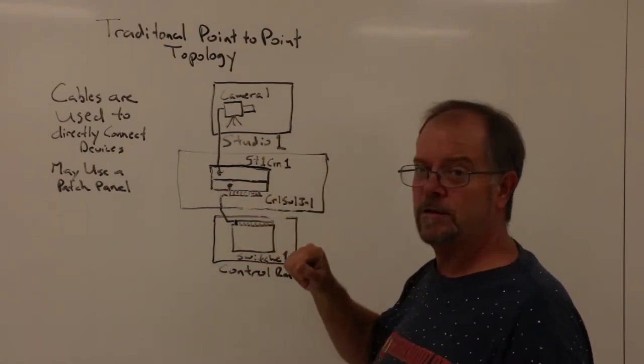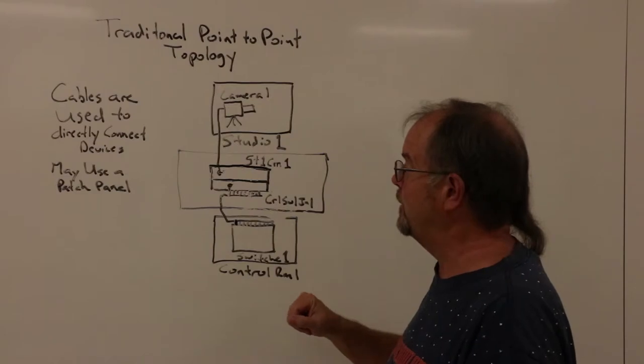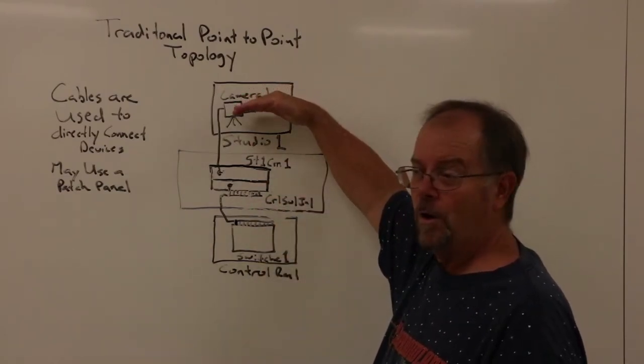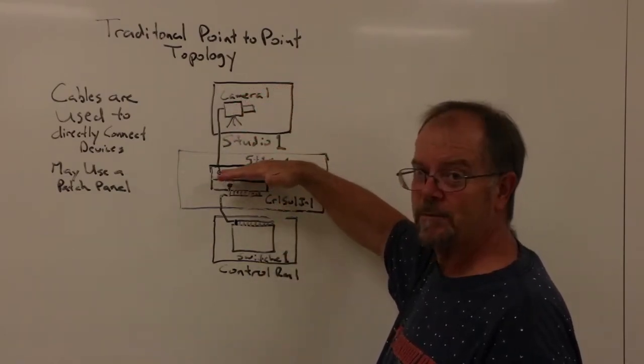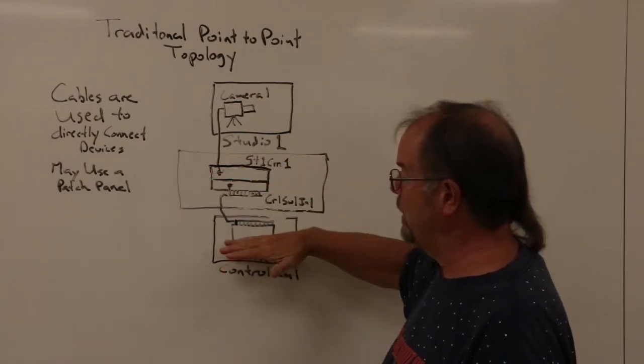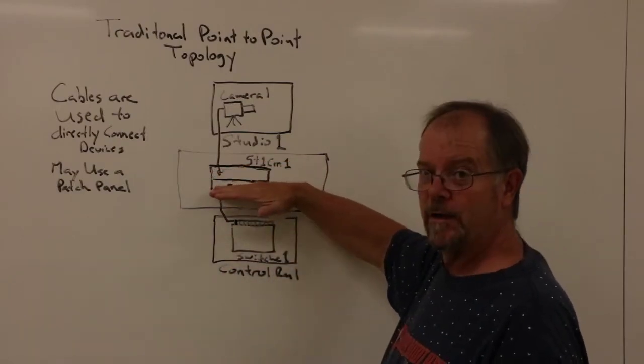In most production studios, they'll use what's called a patch panel. They'll connect all the outputs from Studio 1 into the upper part of this patch panel, and they'll connect all the inputs to the switcher to the lower part of this patch panel.